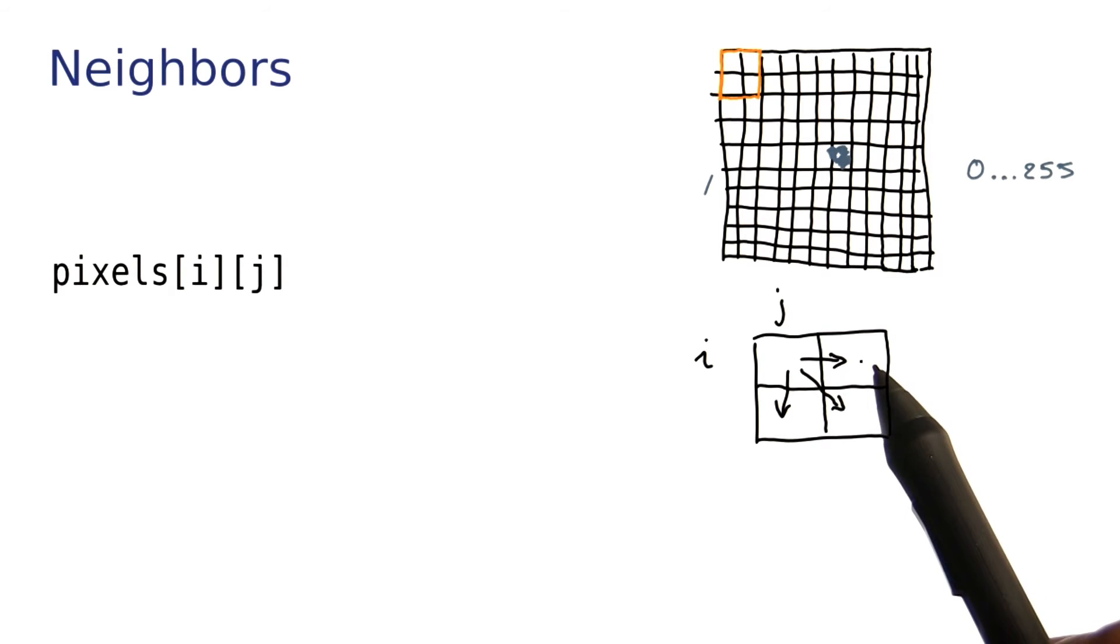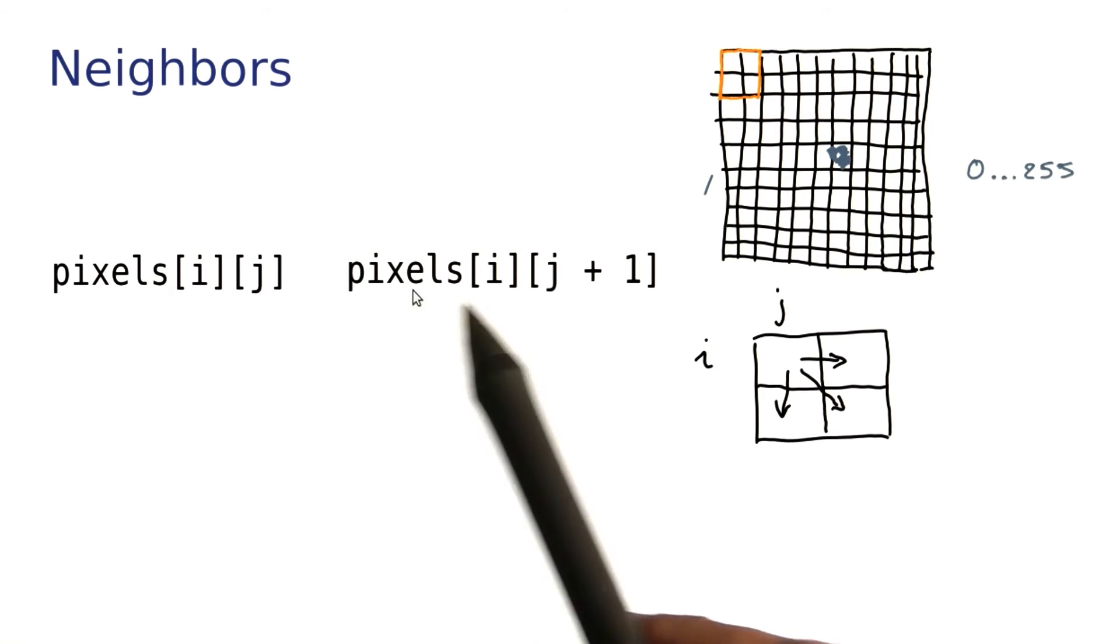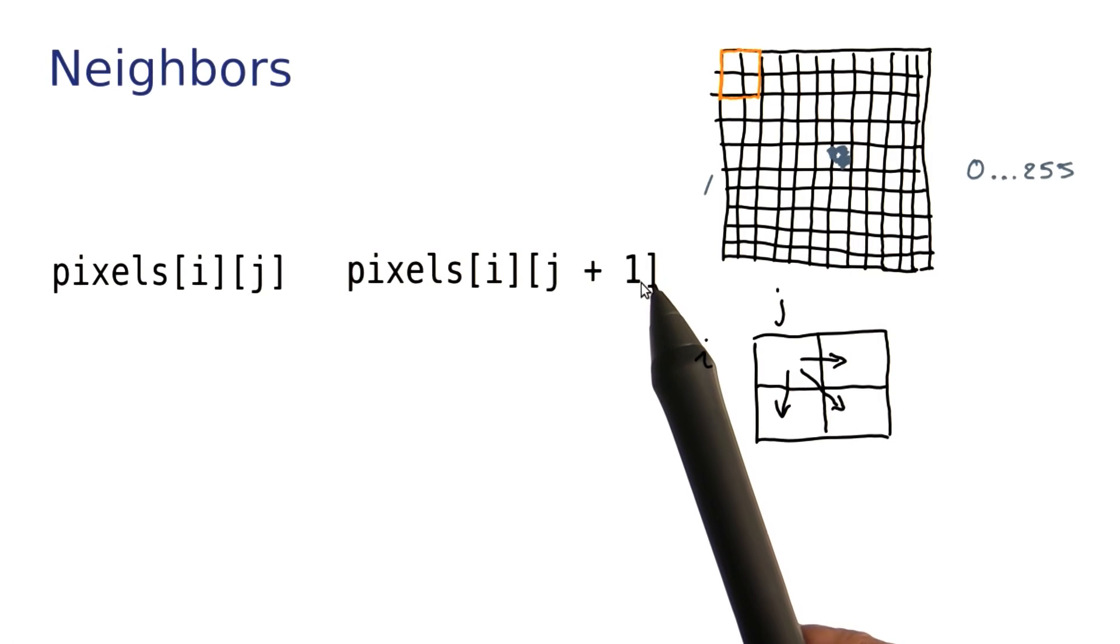Let's look at the one to the right. The row number is the same, and the column number has increased by 1. So here it is in Java. Same row, column increased by 1.